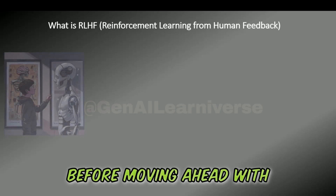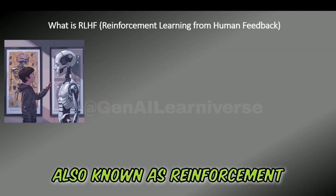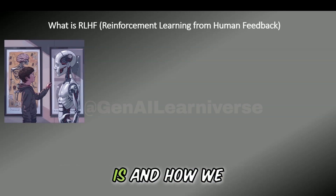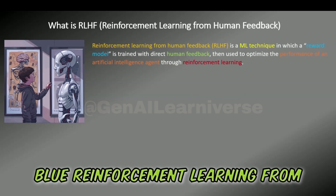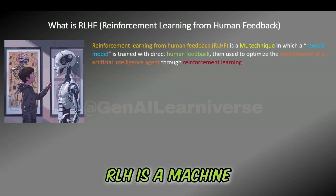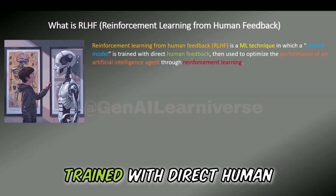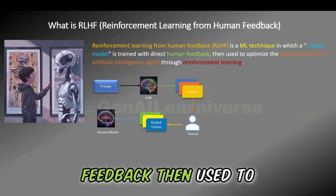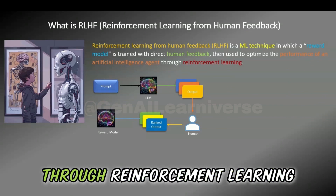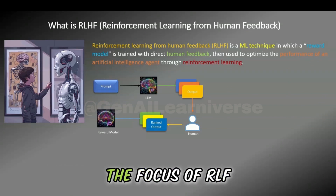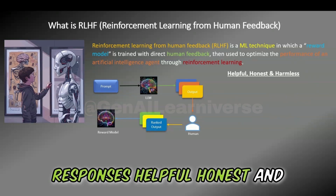Before moving ahead with the story, let's understand what RLHF — reinforcement learning from human feedback — is, and how we can relate it to Blue. RLHF is a machine learning technique in which a reward model is trained with direct human feedback, then used to optimize the performance of an artificial intelligence agent through reinforcement learning. The focus of RLHF is to make model responses helpful, honest, and harmless.